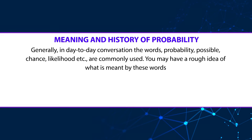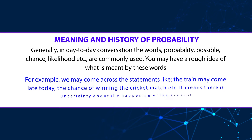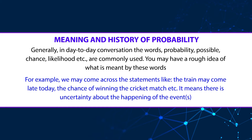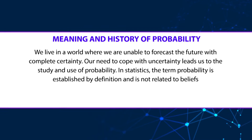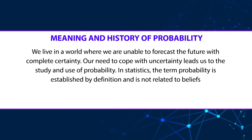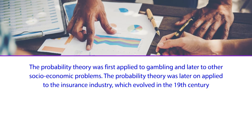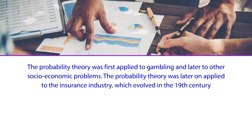Prior to going into the various terms used in probability such as experiments or events, we want to throw a light on the history of probability. In day-to-day conversation, words like probability, possibility, chance, and likelihood are commonly used. We may come across statements like 'the train may come late today' or 'the chances of winning the cricket match.' This means there is uncertainty about the happening of an event, and we live in a world where we are unable to forecast the future with complete certainty. The concept of probability is as old as civilization itself — gambling is an age-old practice, and gamblers have used the probability concept to make bets. The probability theory was first applied to gambling and later to socio-economic problems.